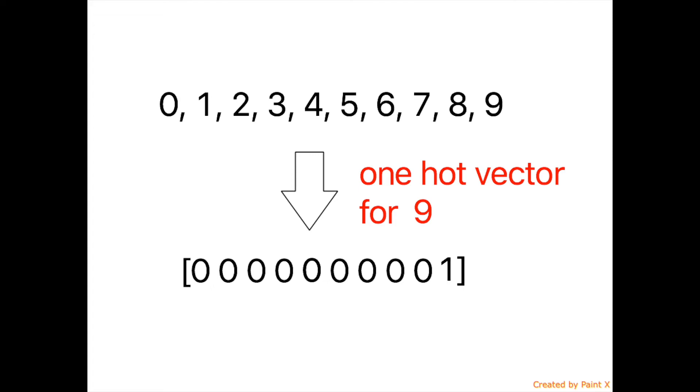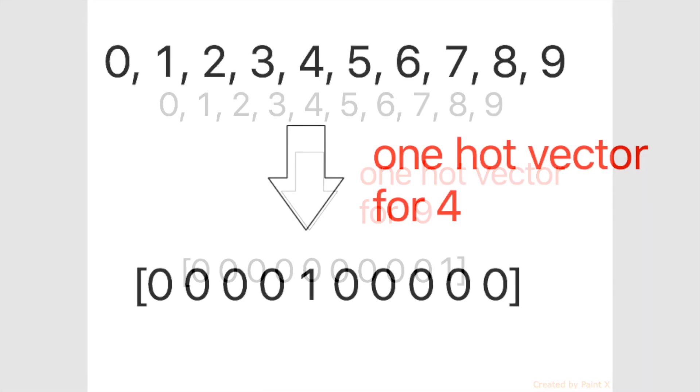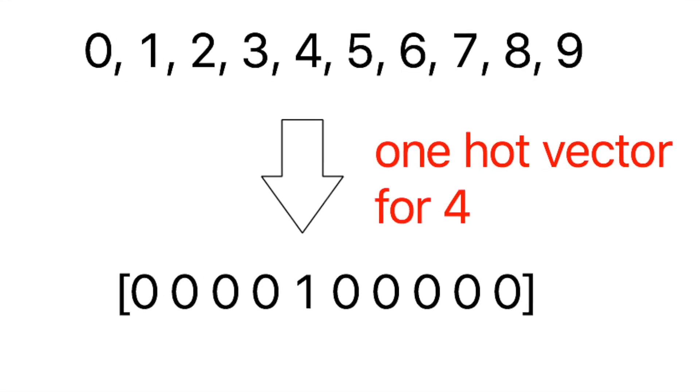Every value in the vector is 0, except the index that belongs to that particular class whose value will be 1. In this case, it's the last index. Similarly, for class 4, it'll look something like this.